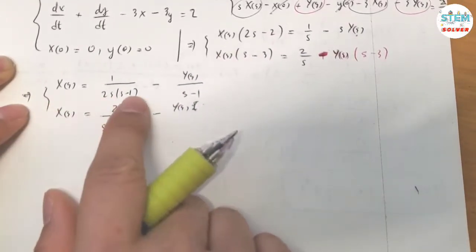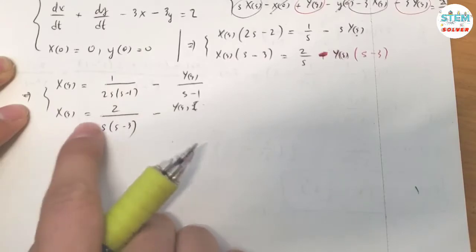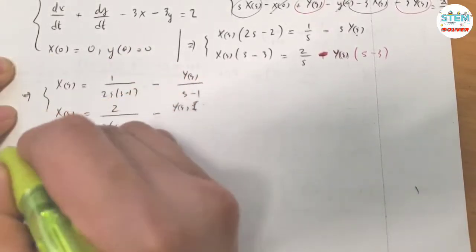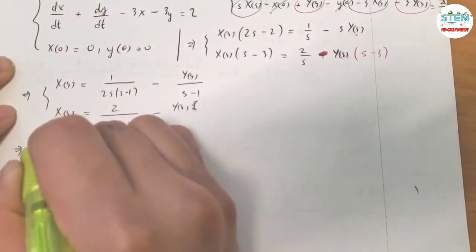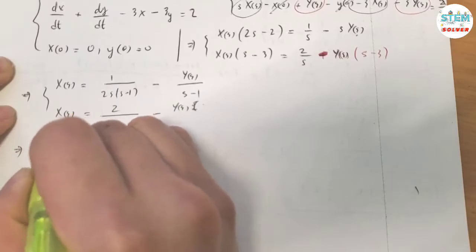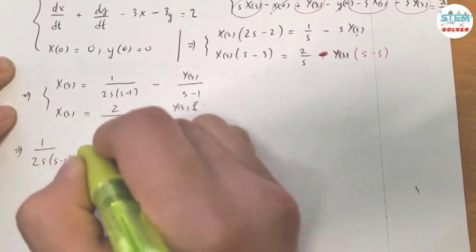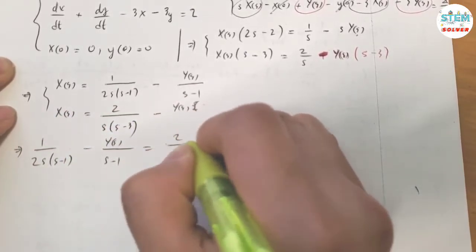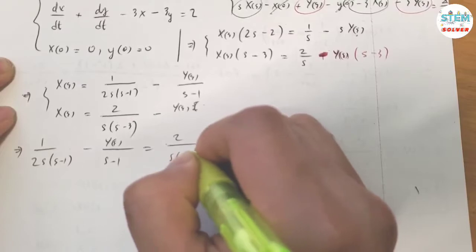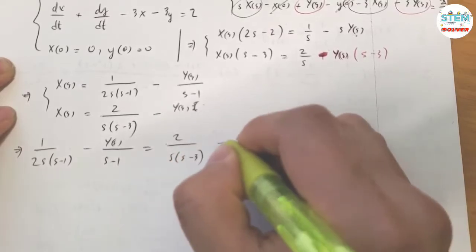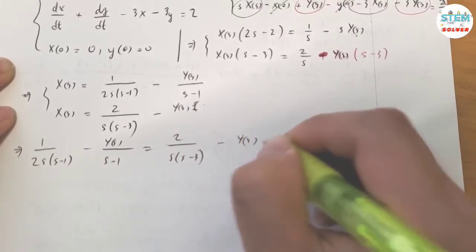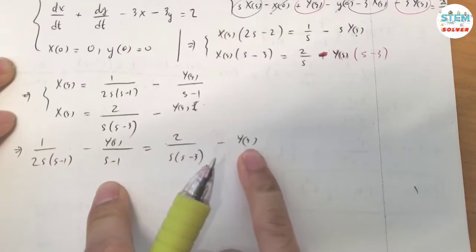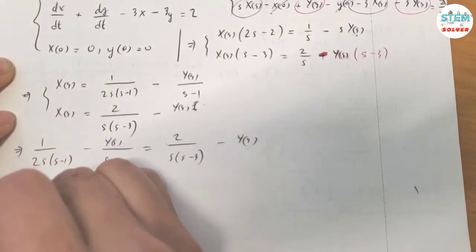Since X(S) equals this expression from the first equation and also equals this expression from the second equation, set them equal to each other. Then move capital Y(S) to one side and factor.